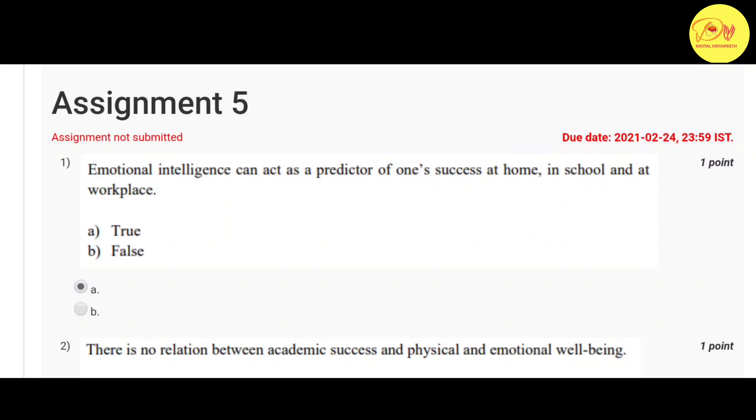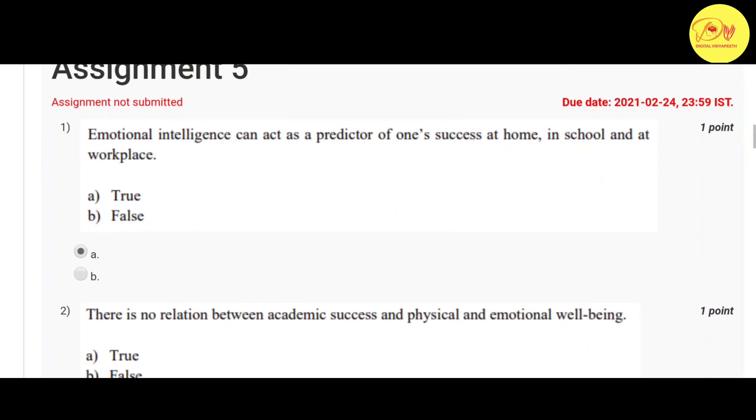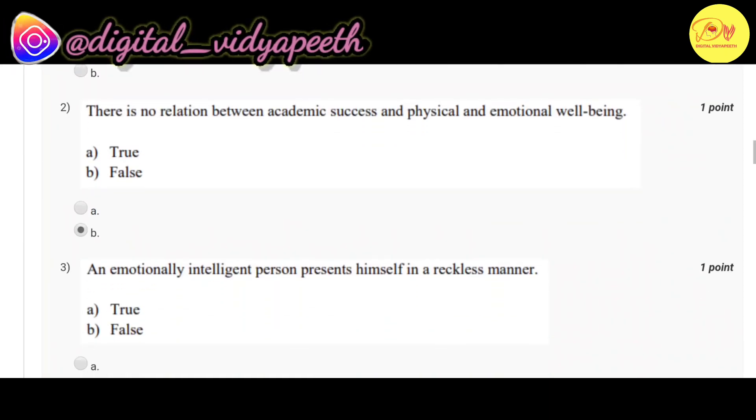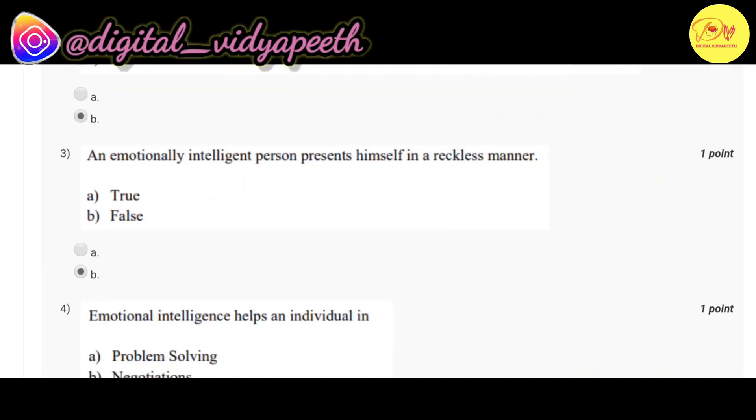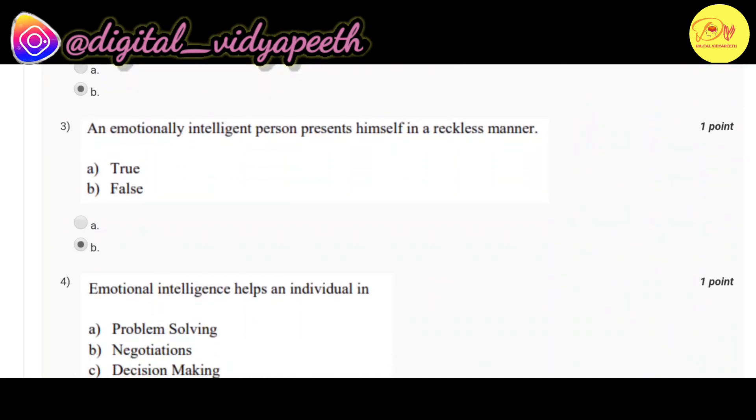Our first question is: emotional intelligence can act as a predictor of one's success at home, in school, and at workplace. Correct option is A, true. Our second question is: there is no relation between academic success and physical and emotional well-being. Correct option is B, false.